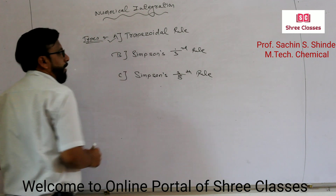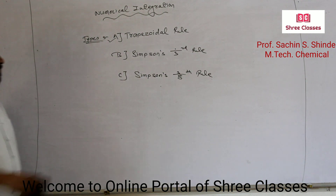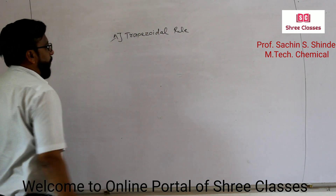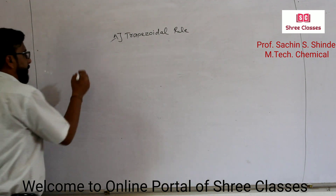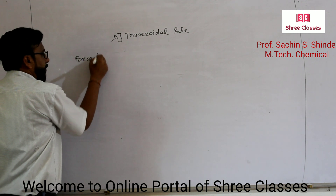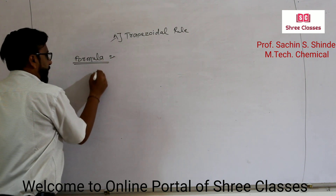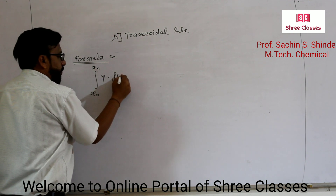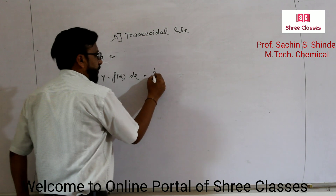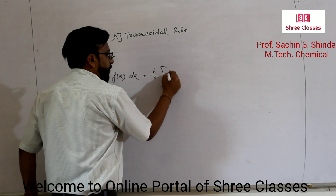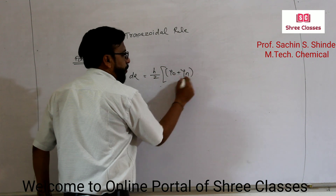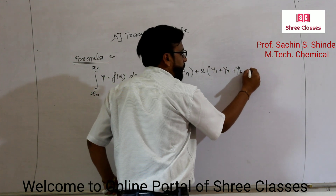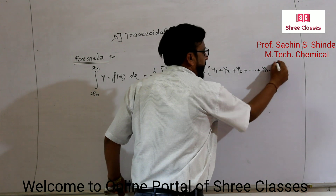Now we start. Number one: Trapezoidal Rule. The formula for the Trapezoidal Rule is: the integration from x0 to xn of y = f(x) dx is equal to h over 2, multiplied by y0 plus yn, plus 2 times (y1 plus y2 plus y3 up to yn minus 1).